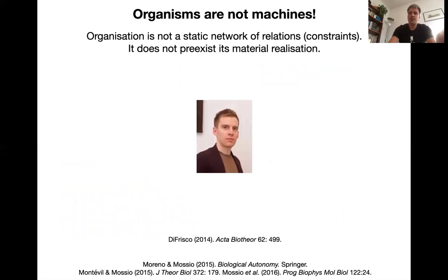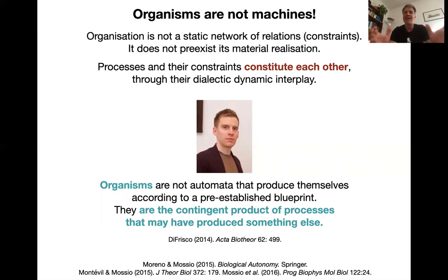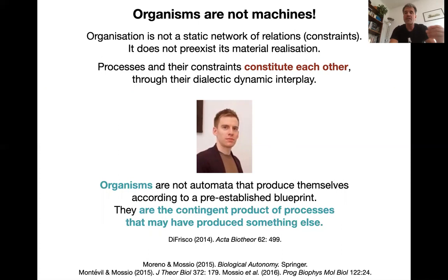As my collaborator, philosopher James DeFrisco, writes: organisms are not automata that produce themselves according to a pre-established blueprint — they are not machines at all. They are the contingent product of processes that may have produced something else — that is why they have autonomy. Their behavior is fundamentally unpredictable, and their actions are initiated from within. We are so preconditioned by mechanistic thinking, but it is a genuine problem for mechanistic explanation.